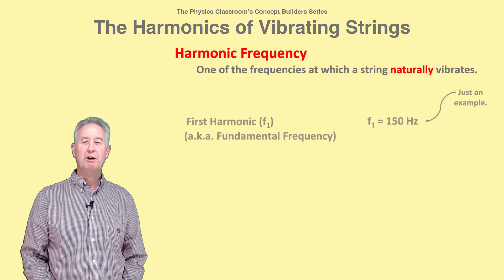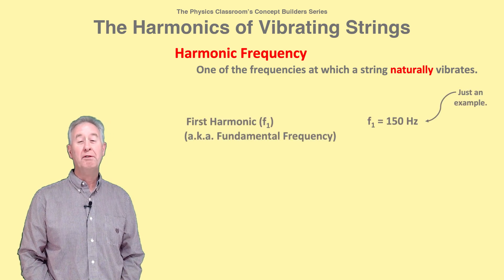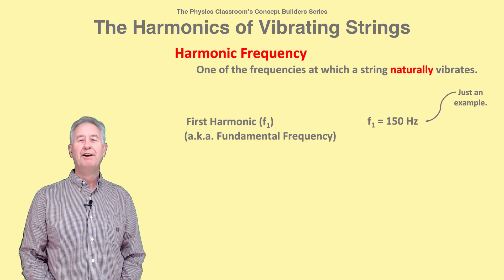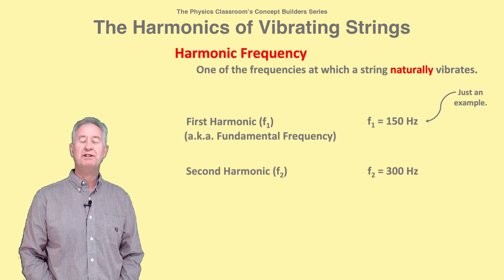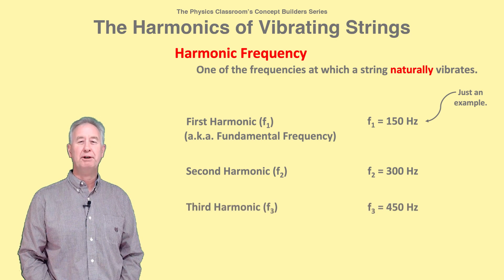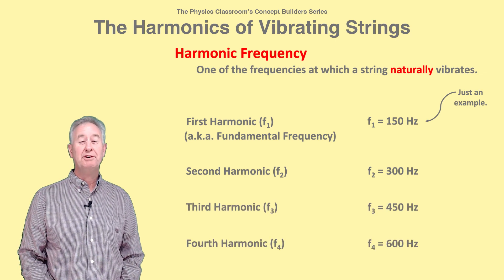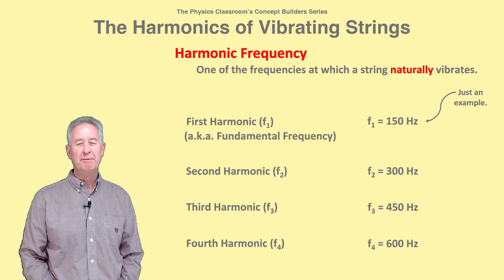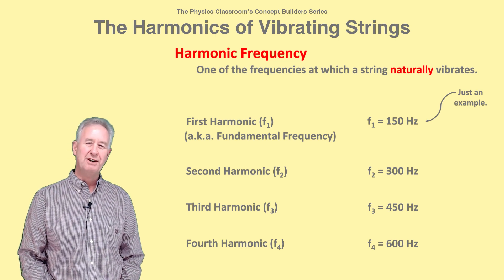The lowest frequency harmonic is the first harmonic, or fundamental frequency. Other frequency values in the set of natural frequencies are whole number multiples of this fundamental frequency and are referred to as the second harmonic, third harmonic, fourth harmonic, etc.